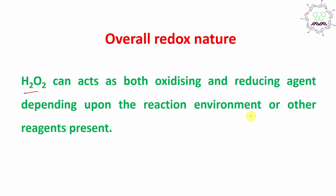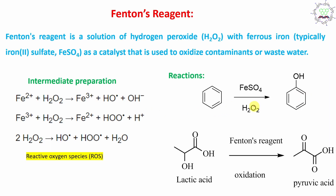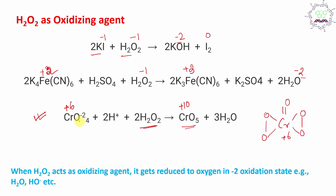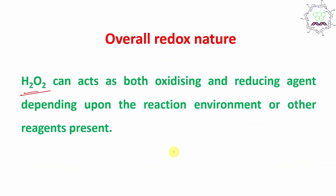Next, hydrogen peroxide's application in chemical reactions. H2O2 is generally utilized as an oxidizing agent. Even during the COVID pandemic we saw sanitizers using hydrogen peroxide, because H2O2 produces reactive oxygen species (ROS) which can kill germs like coronavirus. H2O2 is not a stable molecule and under heat, radiation, or metal catalyst it decomposes to produce reactive oxygen species.